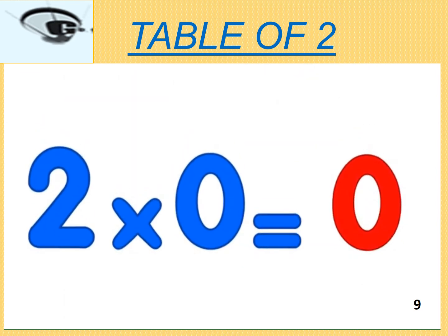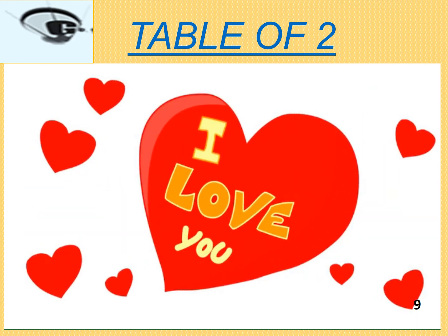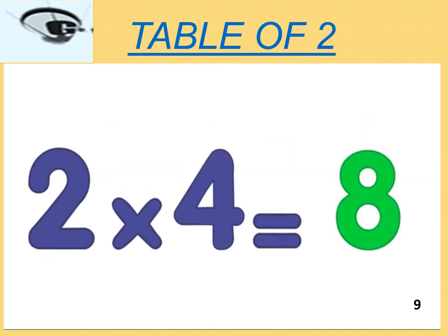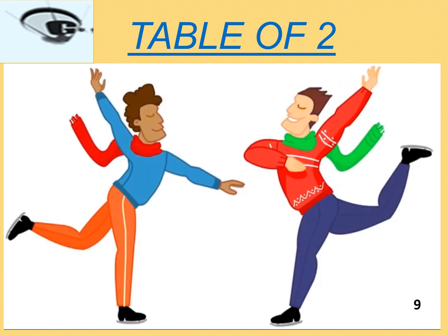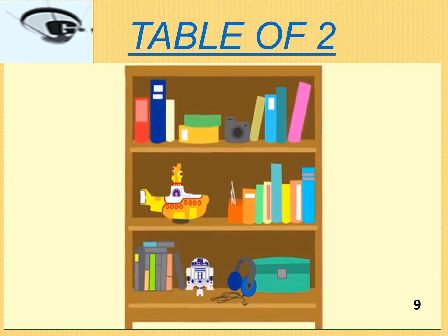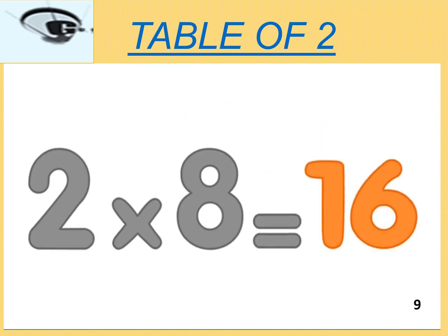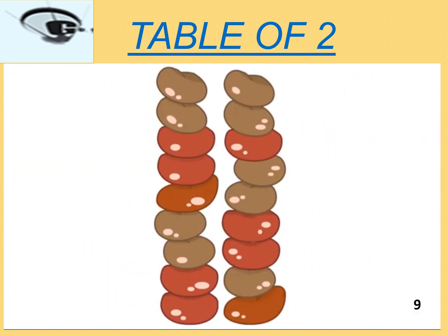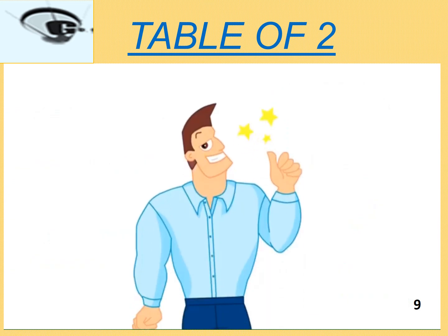Two times one is two. Two times two is four — we always watch Star Wars. Two times three is six — while eating lots of chips. Two times four is eight — daddy likes to ice skate. Two times five is ten — with my uncle Ben. Two times six is twelve — look what's on his shelf. Two times seven is fourteen — a yellow submarine. Two times eight is sixteen — daddy likes his proteins. Two times nine is eighteen — he eats a lot of beans. Two times ten is twenty — look, his tins are empty. Multiplied by two, he never gets the flu.